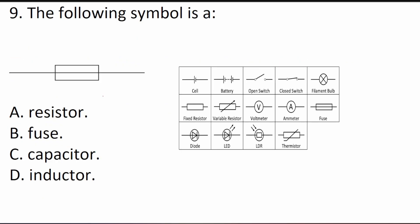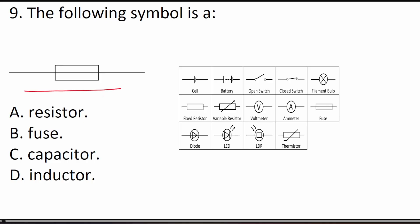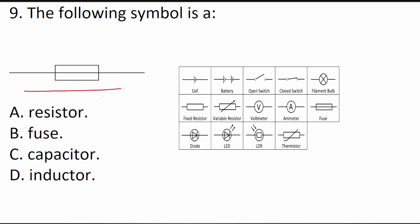Question 9 asks: the following symbol is which component? For the electronics information subtest, you need to recognize electrical symbols. A resistor does not have a line going through the rectangle, but a fuse does have a line going through the rectangle. So this symbol is B, a fuse.